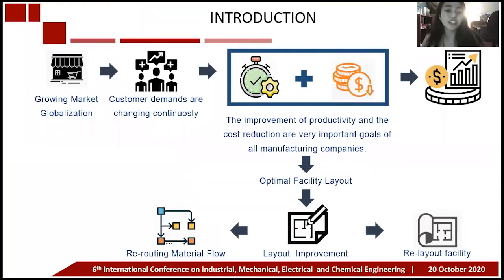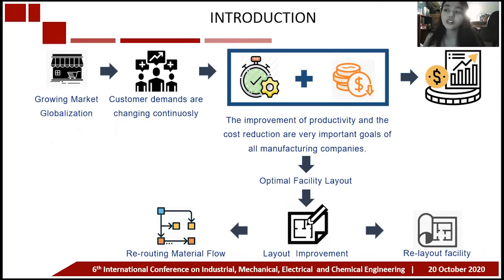First we move to the introduction section of this presentation. In the growing market globalization where customer demands are changing continuously, the enterprises have to focus on cost reduction and profitability. The improvement of productivity and cost reduction are very important goals of all manufacturing companies because it can develop the profit of the company. The optimal facility layout is an effective tool in cost reduction by enhancing productivity.